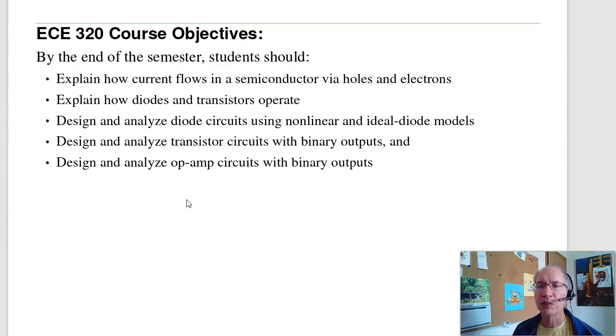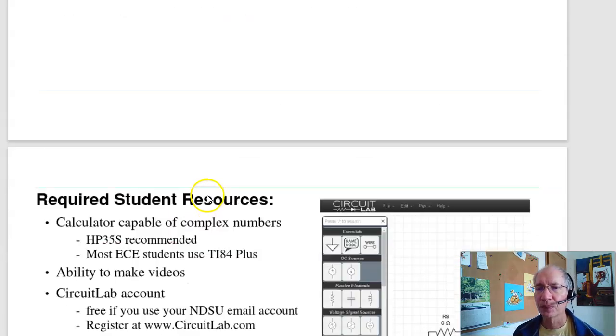In terms of the objectives for ECE 320, by the end of the semester, you should be able to explain how current flows in a semiconductor via holes and electrons. Again, that's what makes semiconductors unique. I've got two types of charge carriers, not just one. You should be able to explain how diodes and transistors operate. You should be able to design, analyze, build, test, and demonstrate diode circuits using nonlinear and ideal diode models, transistor circuits with binary outputs, and op amp circuits with binary outputs.